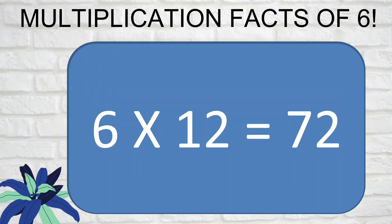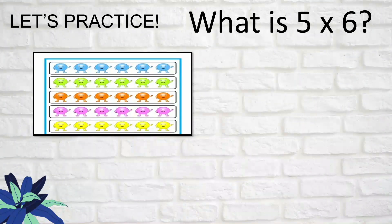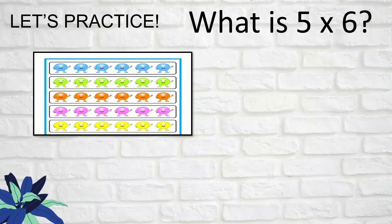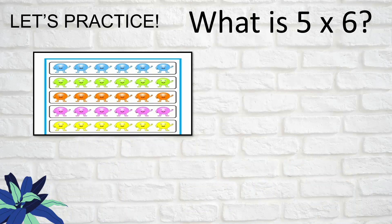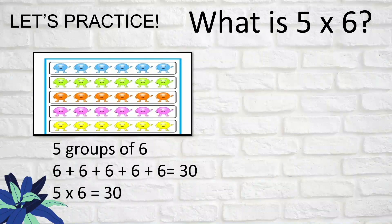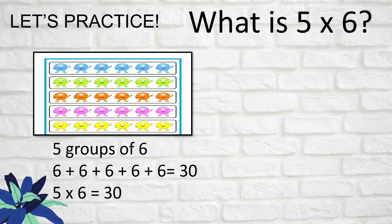Let's practice. I hope you remembered the multiplication facts of six. What is five times six? I'll show you different methods to get the product. There's a picture showing five groups of six, so you can add six five times. Write it as five times six, and that is equal to 30.